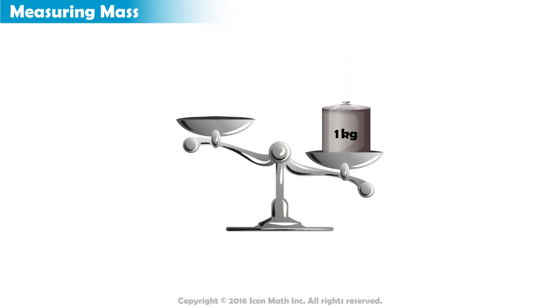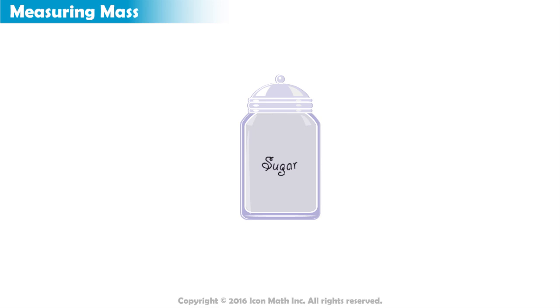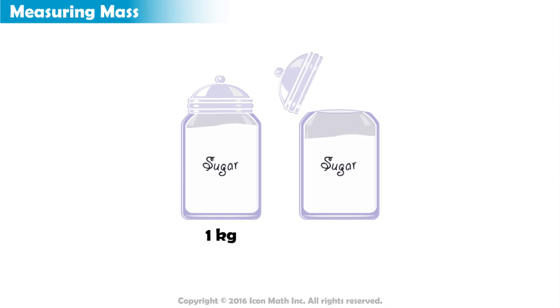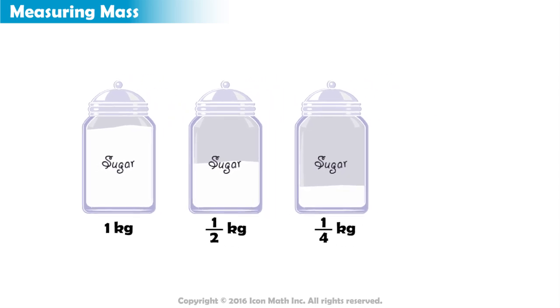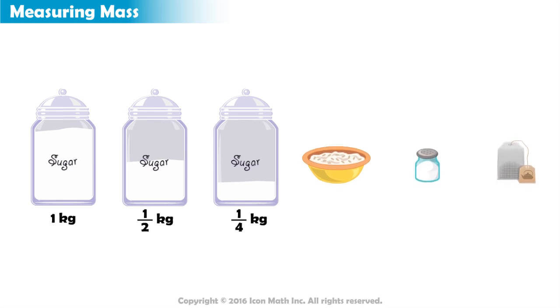What if we want to measure smaller things? Let's take this jar of sugar. If the total amount of sugar in the jar has a mass of one kilogram, then half of it would have a mass of about half a kilogram. And a quarter of this amount would have a mass of about a quarter of a kilogram. But sometimes we need to measure even smaller masses.